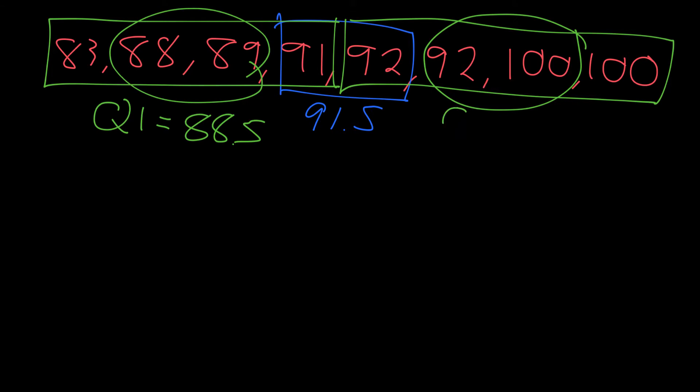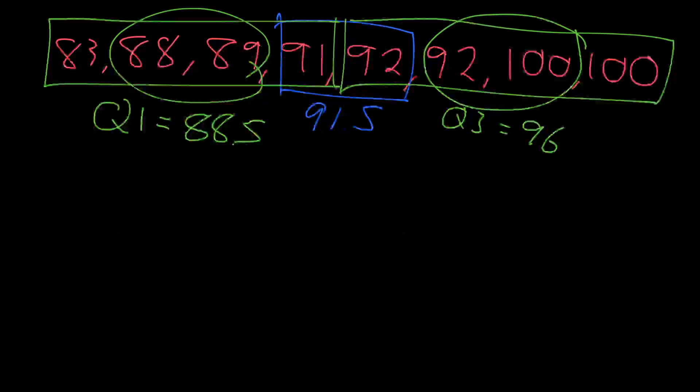And the quartile three would be 96, because 92 plus 100 divided by 2 is 96.